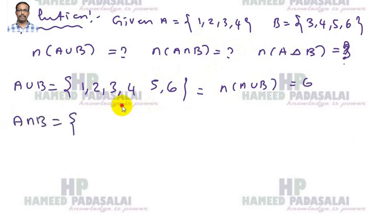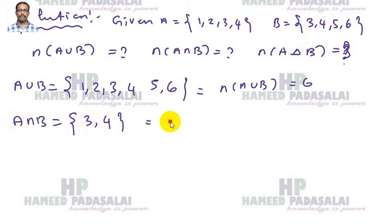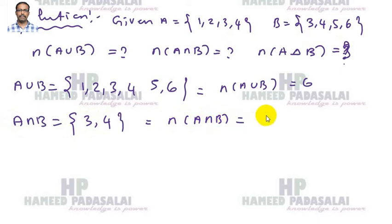A intersection B first. What is A intersection B? A has {1,2,3,4} and B has {3,4,5,6}, so the common elements are {3,4}. This is A intersection B. Number of A intersection B — what is the meaning? Two elements, so the number of A intersection B is 2.